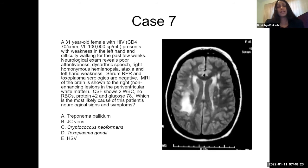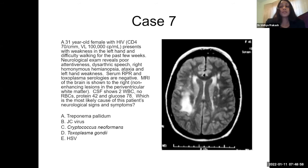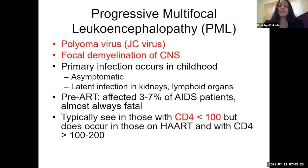Moving to the final case. A 31-year-old female with HIV, CD4 count of 70, presents with weakness and difficulty walking. Neurologic exam reveals poor attentiveness, dysarthric speech, right homonymous hemianopsia, ataxia, and left-handed weakness. Serum RPR and toxoplasma serologies are negative — toxoplasma IgG is negative. MRI shows non-enhancing lesions in the periventricular white matter. CSF shows two white blood cells, no red blood cells, protein of 42, glucose of 78. This is a case of progressive multifocal leukoencephalopathy due to polyomavirus — JC virus.